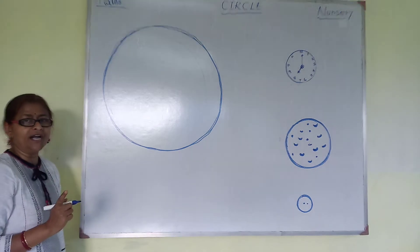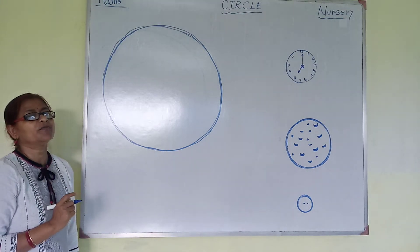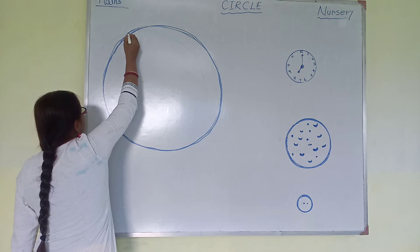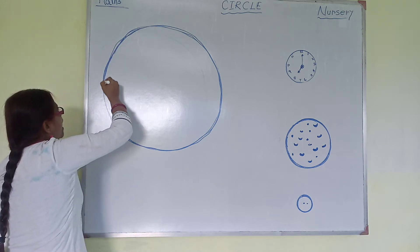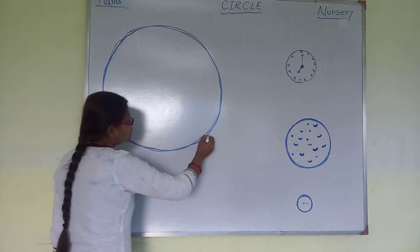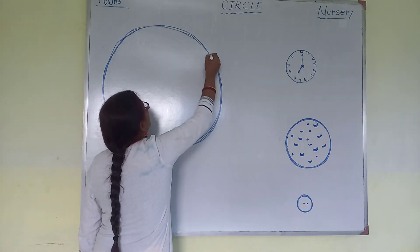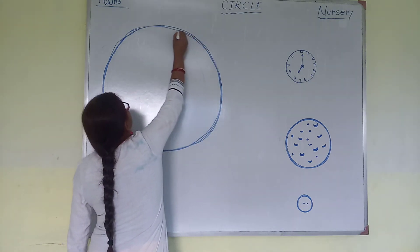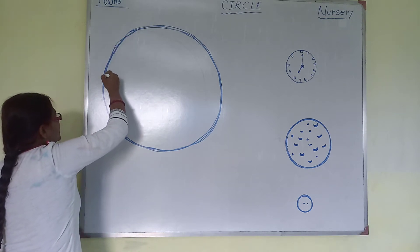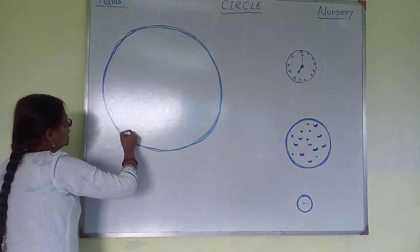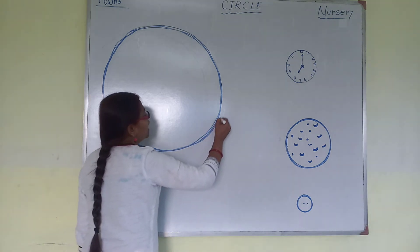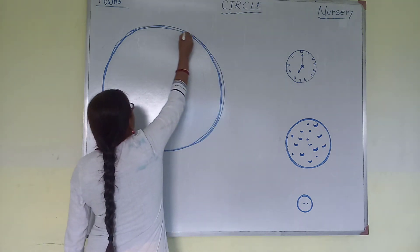Everyone will try to sing with me. Circle goes round and round. It has no sides, no bottoms. Circle goes round and round. It has no sides, no bottoms.